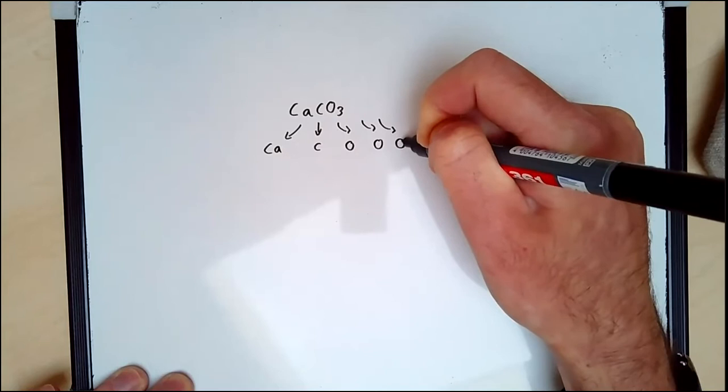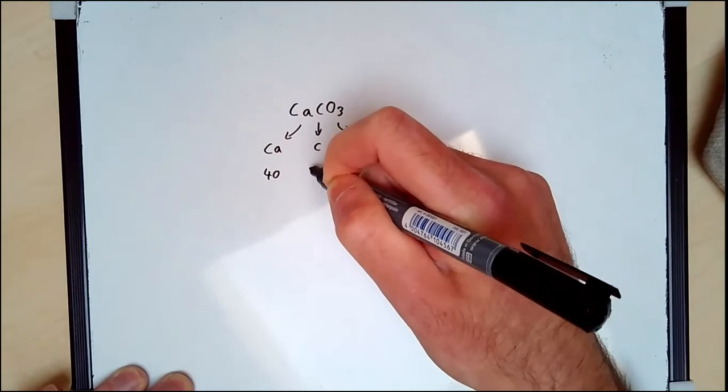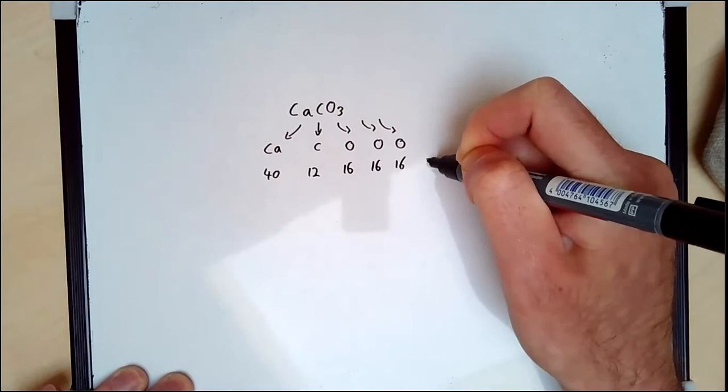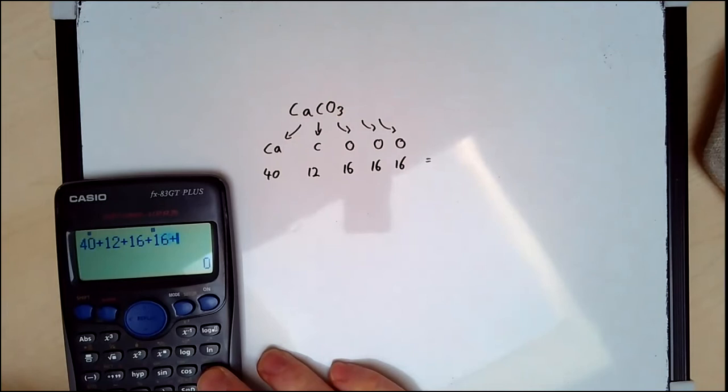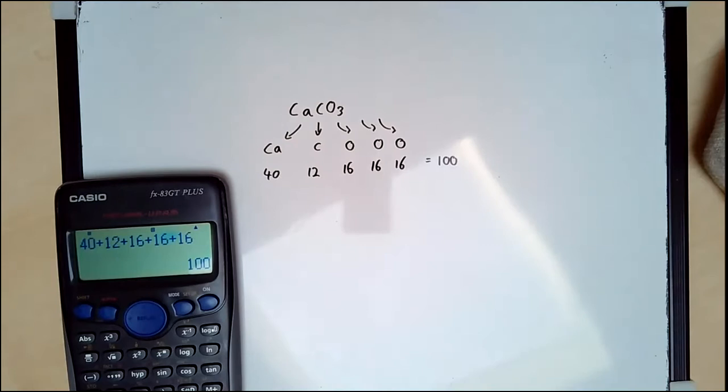My Ca is 40, my C is 12. 16, 16, 16. You could have just done this as times three. Get my trusty calculator. 40 plus 12 plus 16 plus 16 plus 16, it's going to be a nice round hundred. If you got that correct, well done. If you didn't, I suggest you go back to my worked examples.